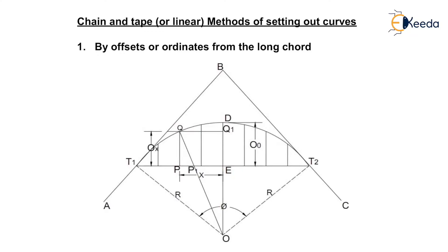As you can see, we have two tangents AB and BC. Let AB and BC be the tangents of the curve. T1 and T2 are the tangent points, and T1T2 is the long chord of length L.